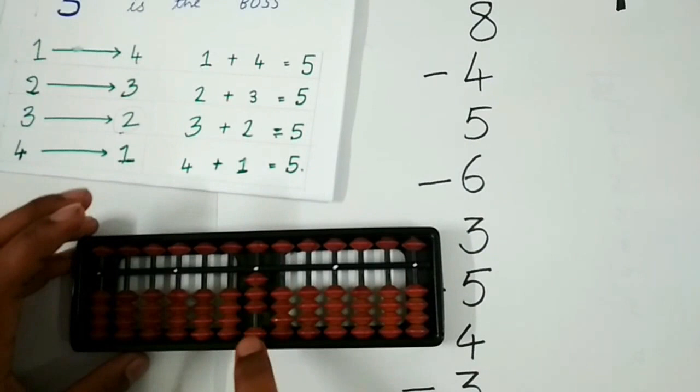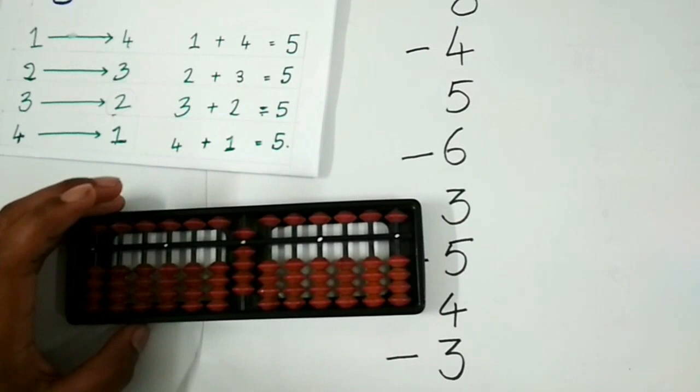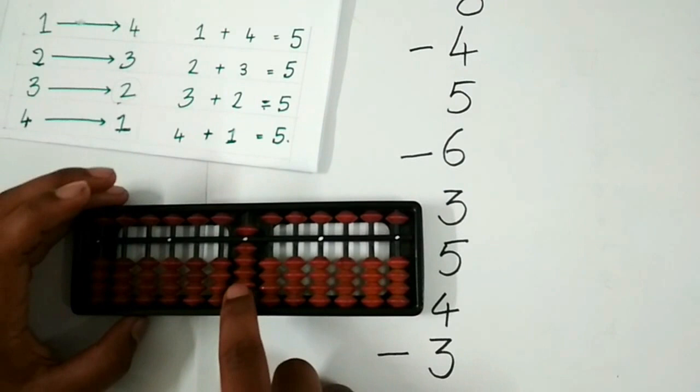Now to add 5, let us check do we have enough bits or not. We have enough bits so we can add 5 directly. Let us check to subtract 6. To subtract 6, we see that we have 9 over here and 6 can be subtracted directly.